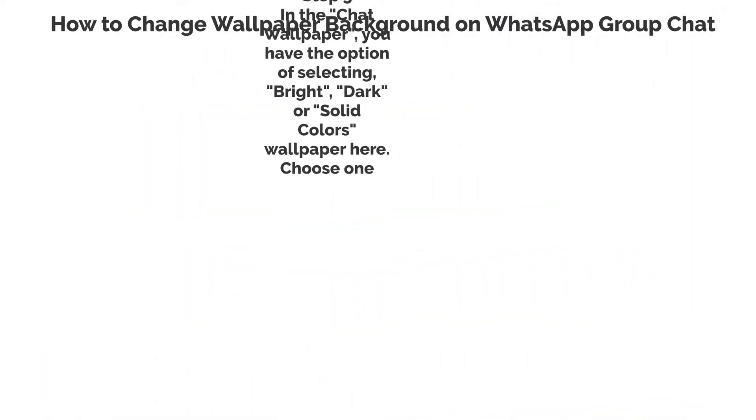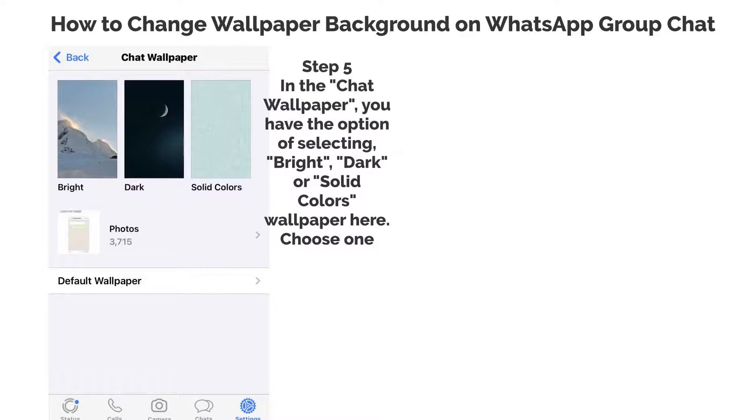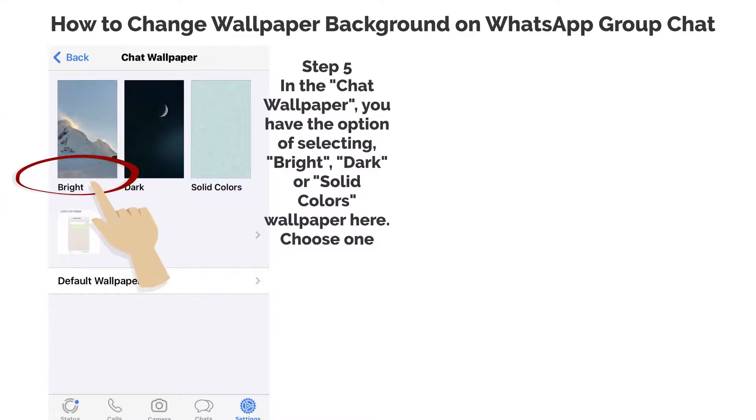Step 5. In the chat wallpaper, you have the option of selecting bright, dark, or solid colors wallpaper here. Choose one.